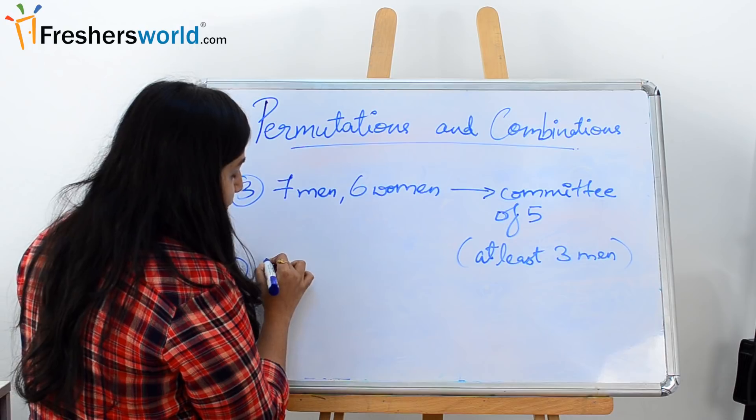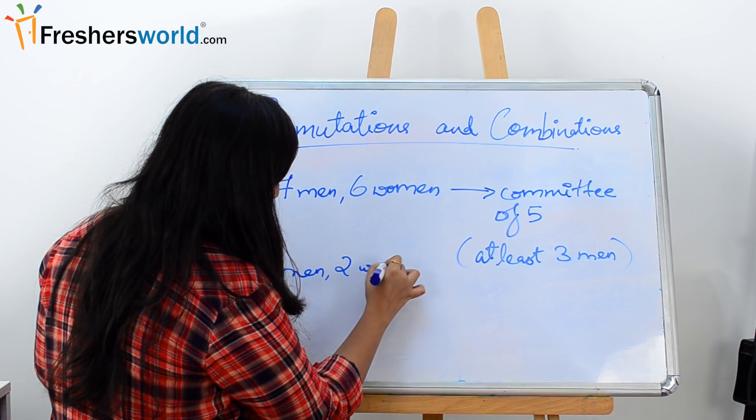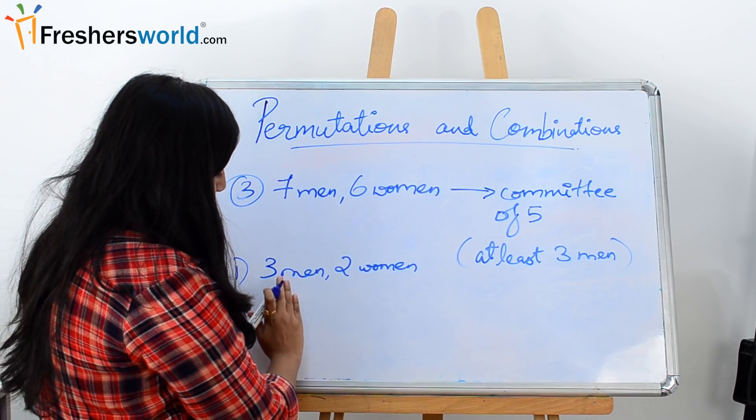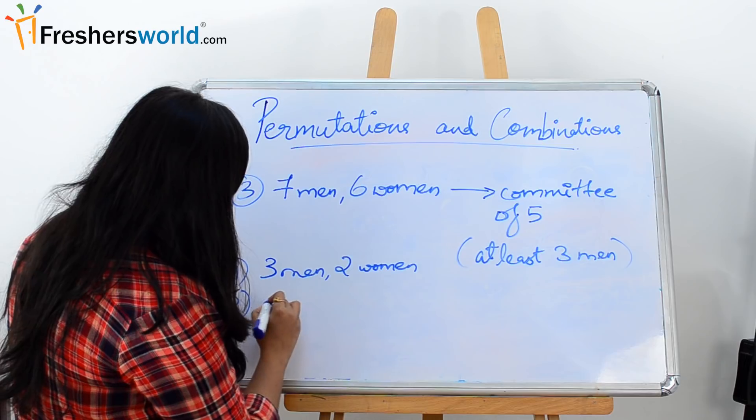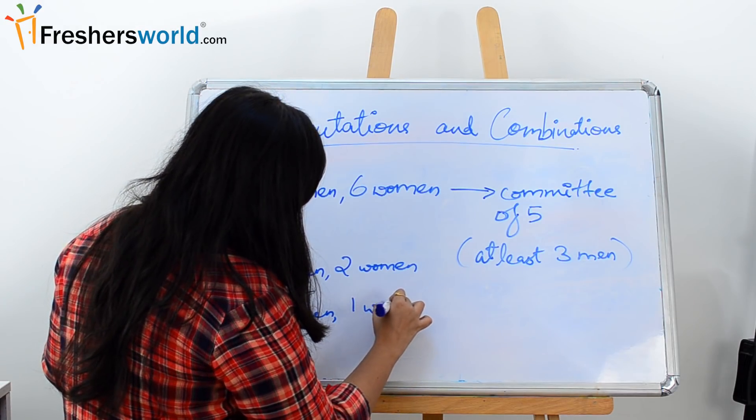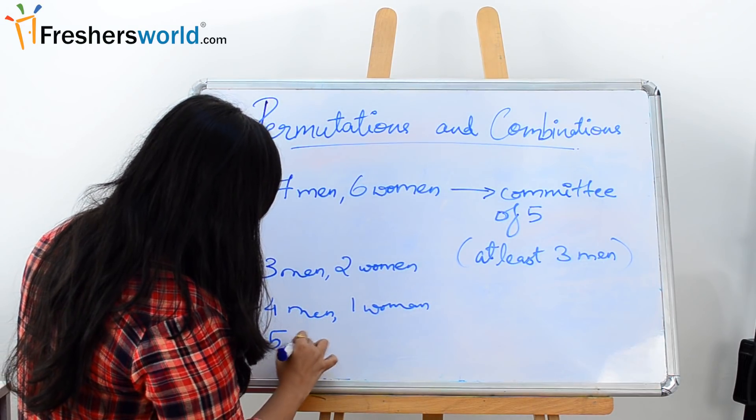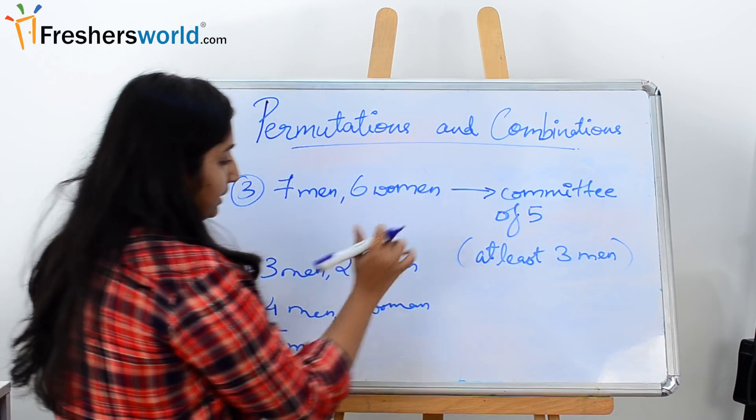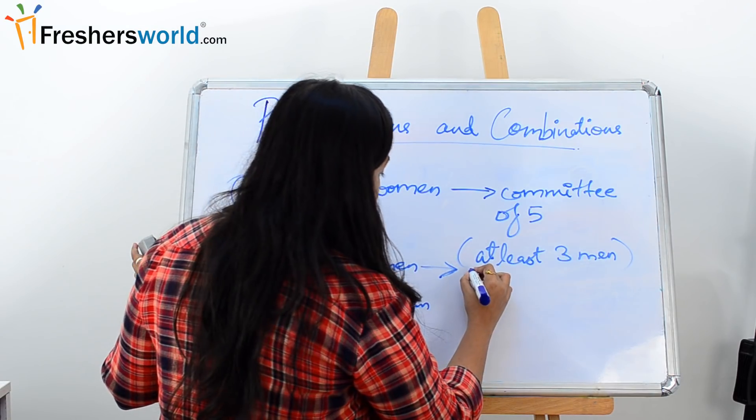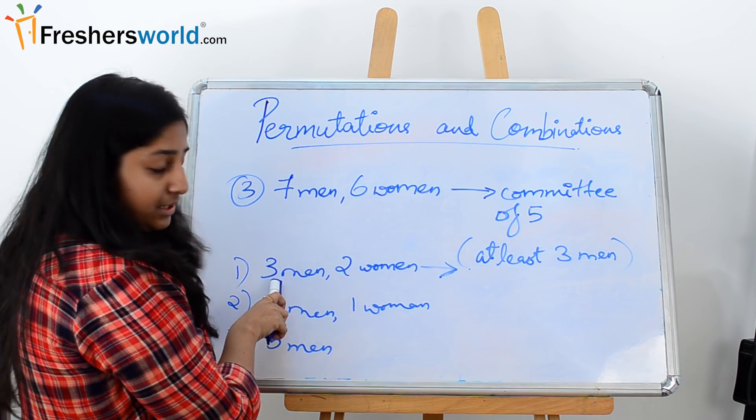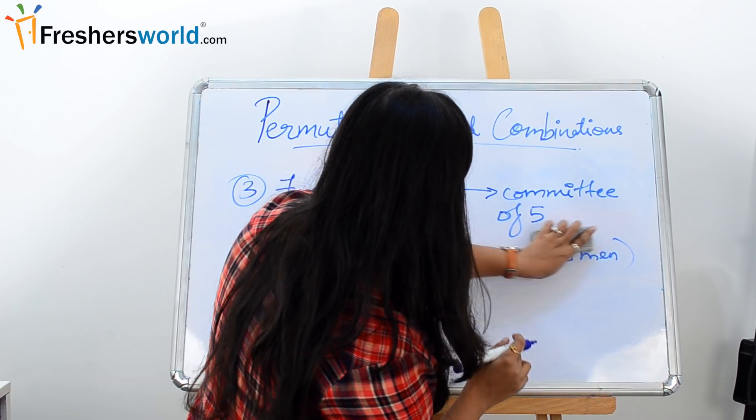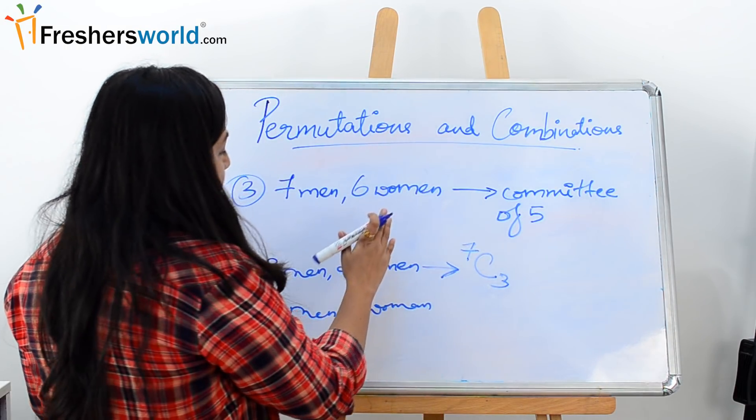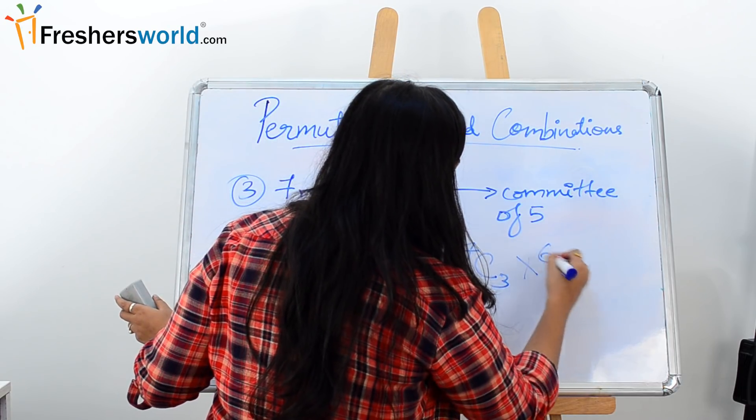Since we have to create a committee of 5, it can either be 3 men and 2 women, or it can be 4 men and 1 woman, or it can be a group or a committee of all 5 men. So we have 3 cases here. First one is 3 men and 2 women. See, we started with 3 men because we have a condition here that at least 3 men should be there. So first case would be 3 men and 2 women. Second case would be 4 men and 1 woman. And third would be 5 men and 0 women, which no need to mention. So first, start with 3 men and 2 women. So the possible combinations here would be, since you see we have 7 men and we need 3 men out of it, so 7C3, and we need 2 women out of 6 women, so it would be 6C2.